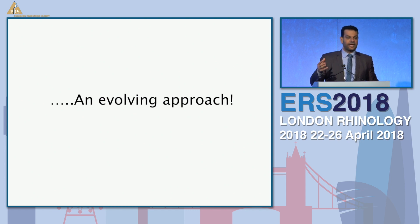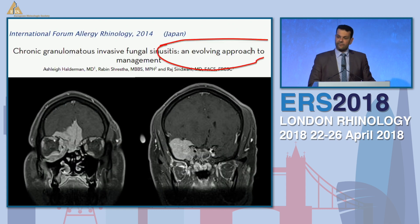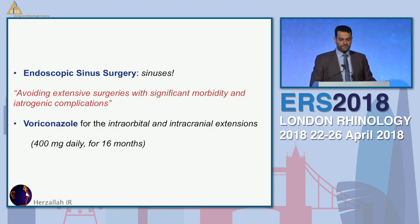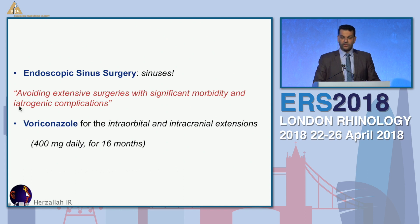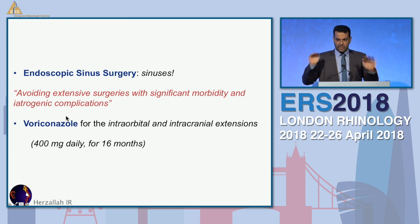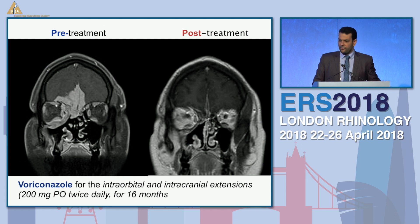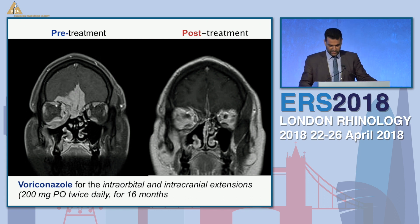This evolving approach for managing chronic invasive and chronic granulomatous invasive fungal sinusitis is further supported by another case from Japan involving extensive chronic invasion into the brain and temporal lobe — an amazing case. With the approach of endoscopic sinus debridement of the sinus portion only, then voriconazole 400 mg daily for one and a half years, the pre-treatment and post-treatment imaging shows remarkable resolution.